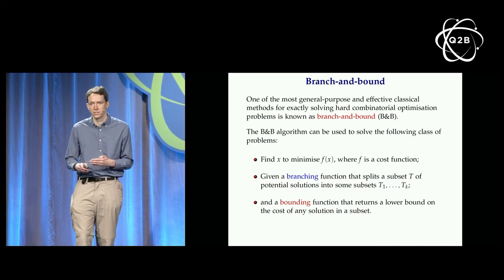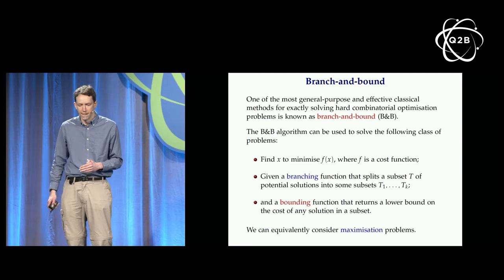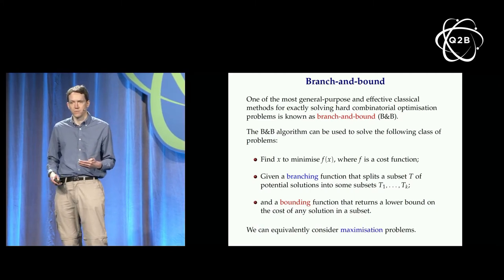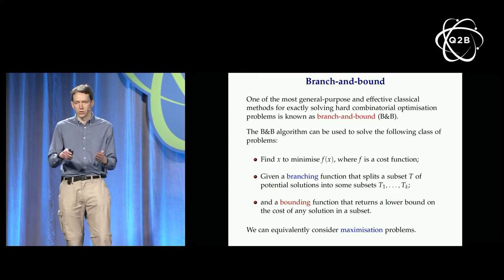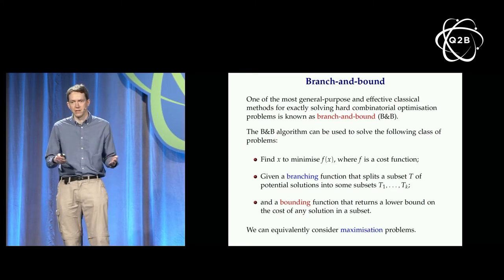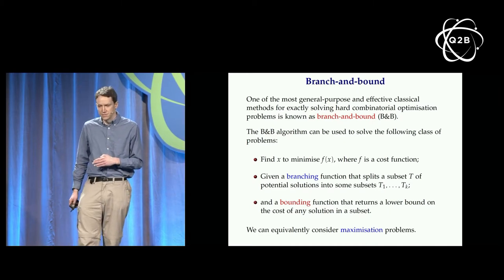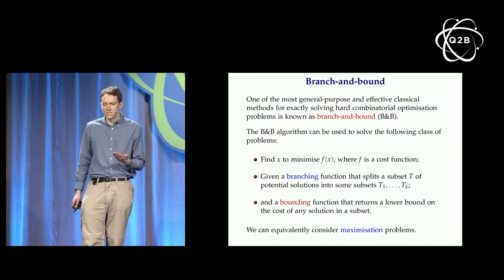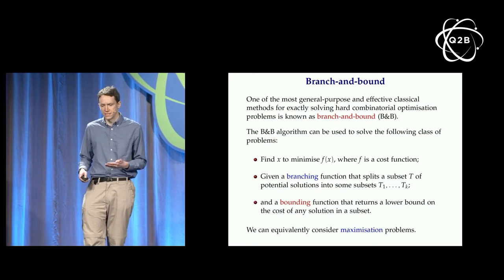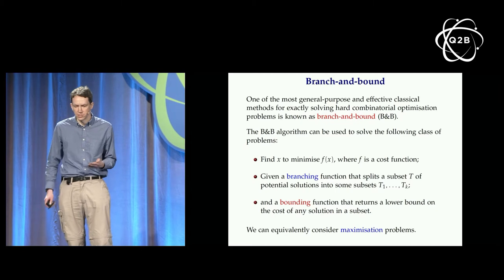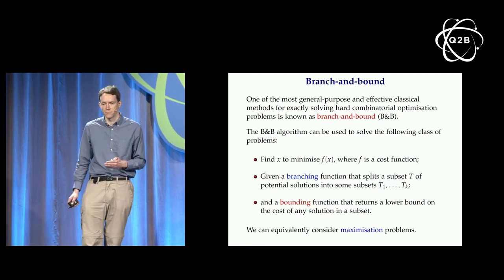Sometimes you can produce these subroutines in a concrete way. We could also think about maximization problems by replacing everything with the obvious transformation. All we need to use the branch and bound approach is these subroutines. This seems a bit abstract, so I want to give a concrete example to show how you might use this idea in practice.